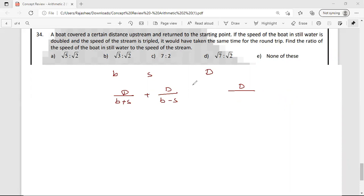Both are double, speed triple. 2B plus 3S, D by 2B minus 3S. It would have taken same time for the round trip. Total timing is same.